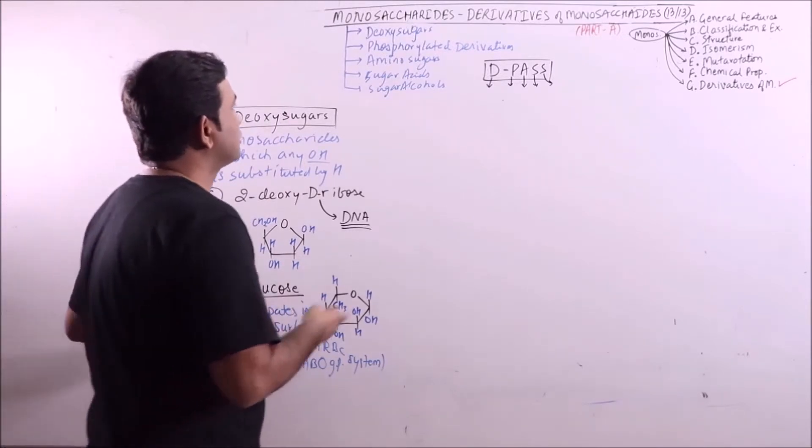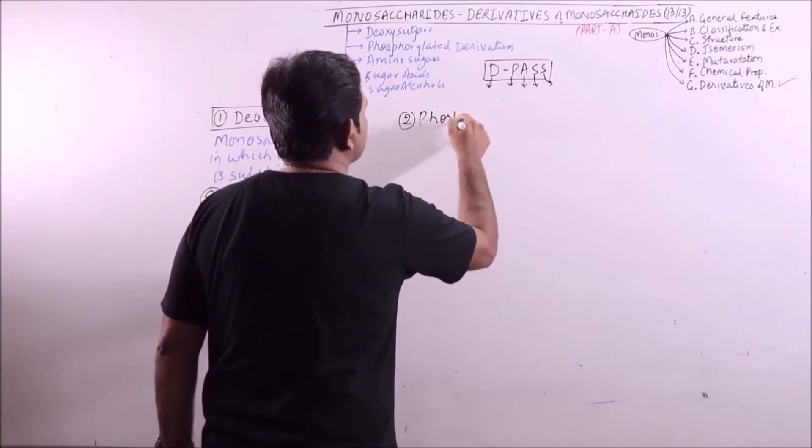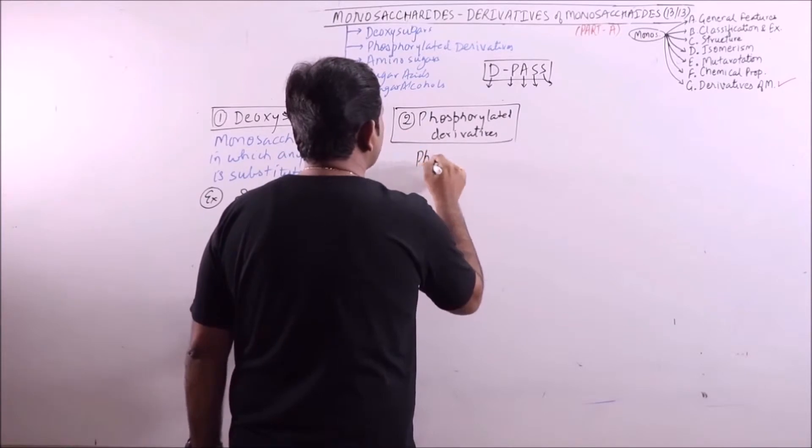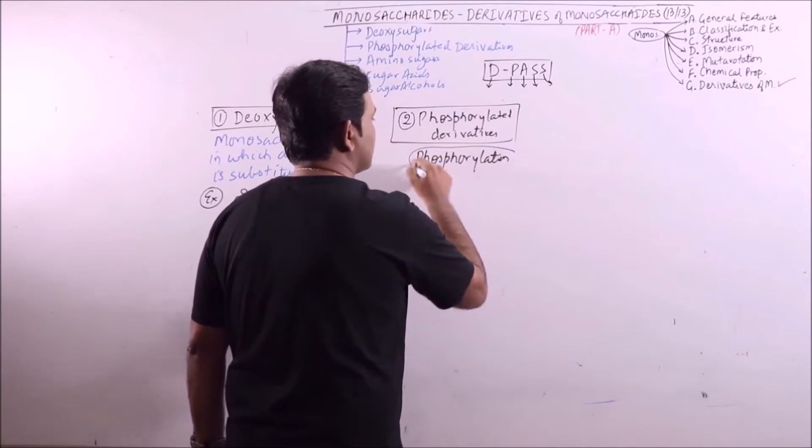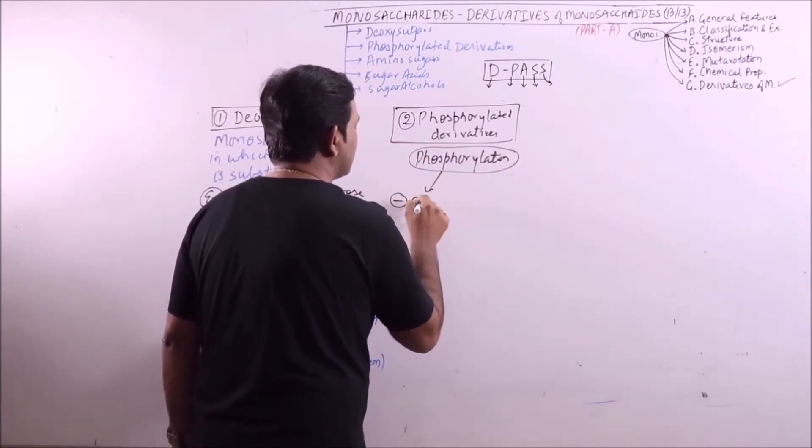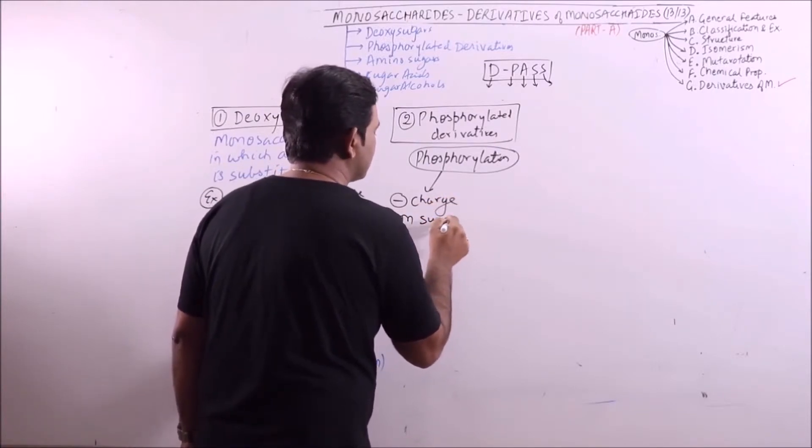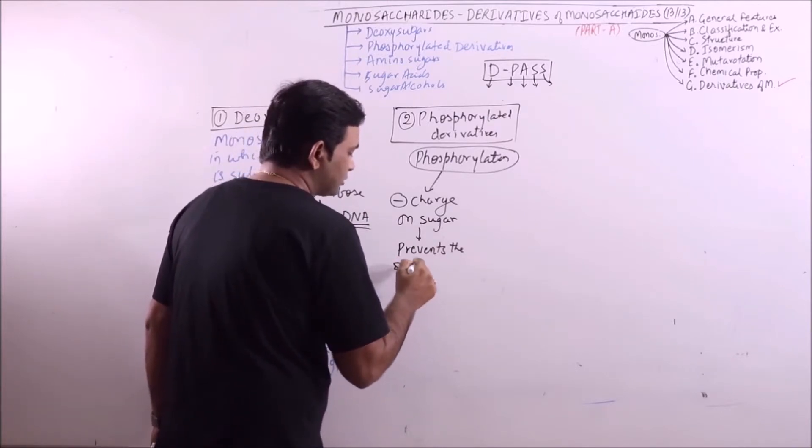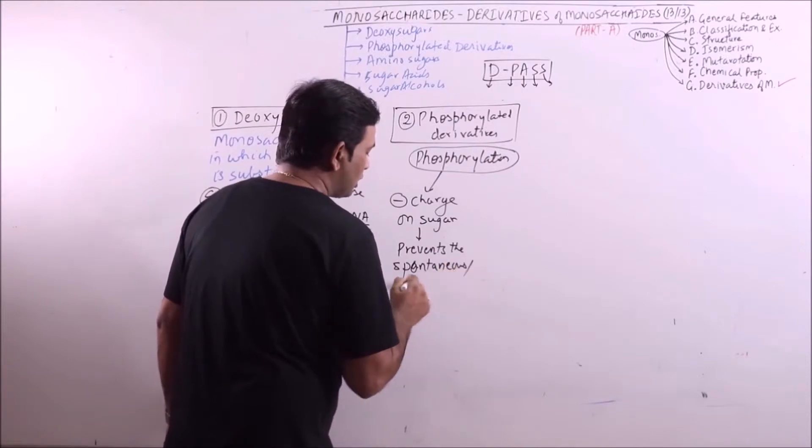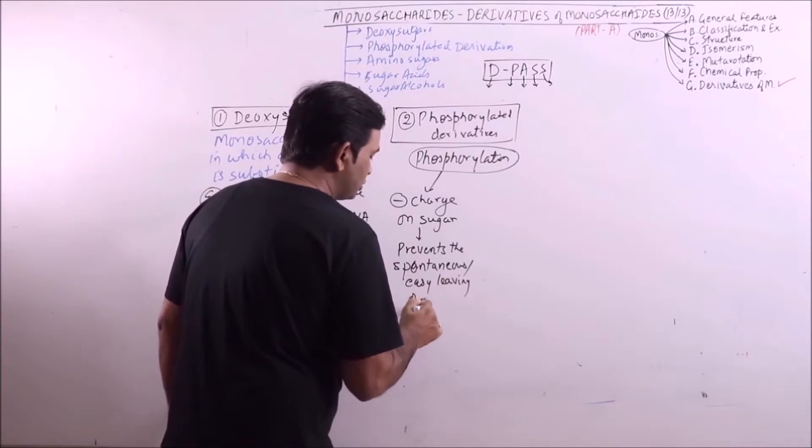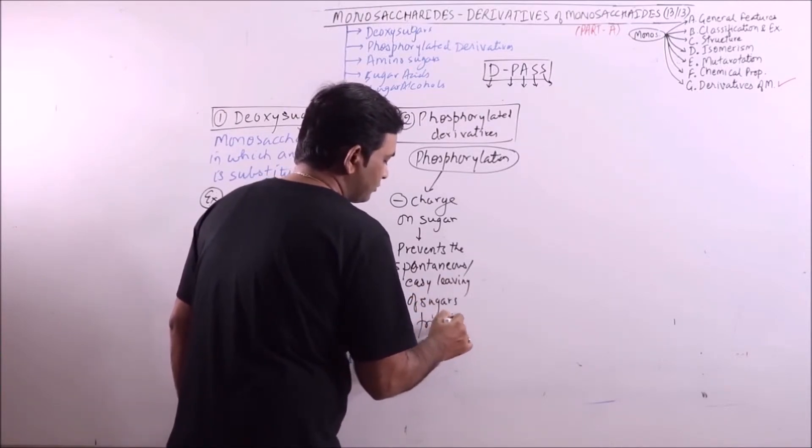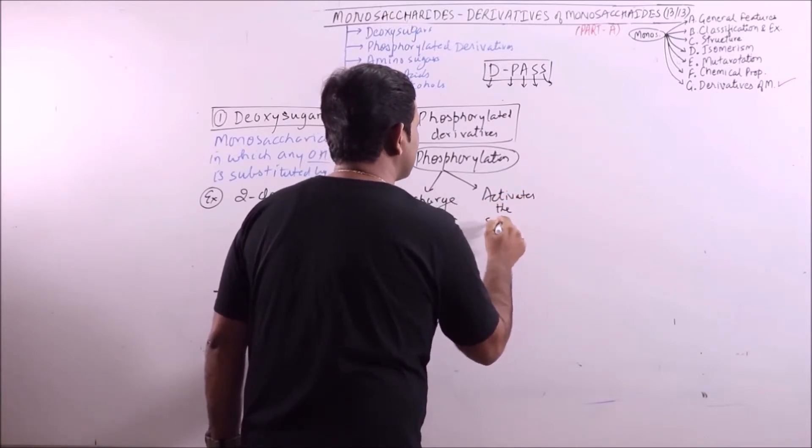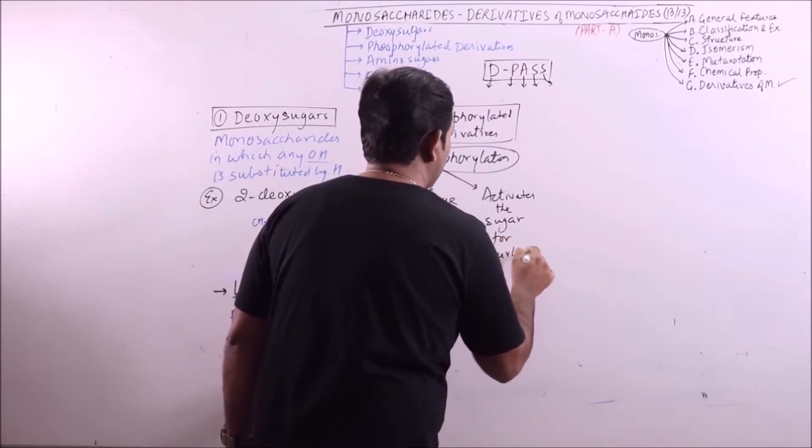Now the next group is phosphorylated derivatives. Now what is the effect of phosphorylation? Phosphorylation induces negative charge on sugar. It prevents the spontaneous or easy leaving of sugars from the cell through the membrane. Another thing is that it activates the sugar for further reaction.